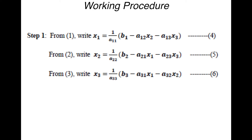All these are expressions for the unknowns in terms of other unknowns: x1 is expressed in terms of x2 and x3, x2 is expressed in terms of x1 and x3, and x3 is expressed in terms of x1 and x2. This is the first step in the Gauss-Seidel method.